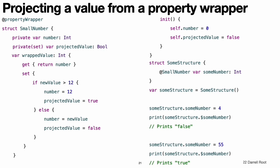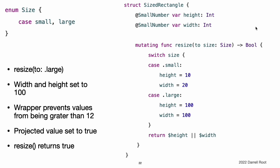A property wrapper can return a value of any type as its projected value. In this example, the property wrapper exposes only one piece of information — whether the number was adjusted — so it exposes that boolean value as its projected value. A wrapper that needs to expose more information can return an instance of some other data type, or it can return self to expose the instance of the wrapper as its own projected value. When you access a projected value from code that is part of the type, like a property getter or an instance method, you can omit self before the property name. The code in this example refers to the projected value of the wrapper around height and width as $height and $width.